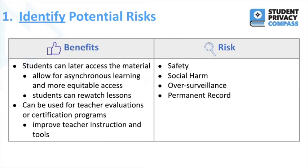Now that we've talked about the benefits, let's get into the risk management process — step one: identifying potential risks in this scenario. These are how we thought about the risks posed in this example, though they're not an exclusive list. First is safety: depending on how the recording is stored or who it's shared with, someone outside of the classroom or school could gain access, potentially learning where a particular student is who should not know the student's whereabouts. There's also the risk of social harm — depending on what is happening in class, say during discussions or Q&A, students may not want wrong answers or mistakes recorded that could later result in bullying or embarrassment.